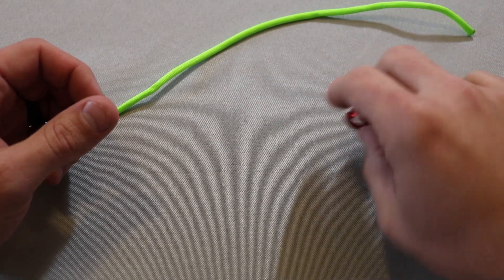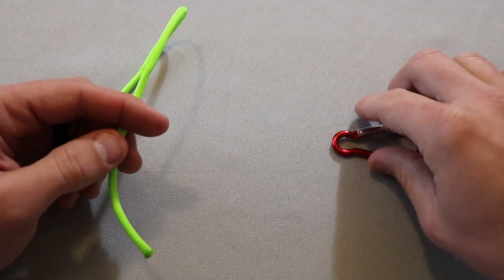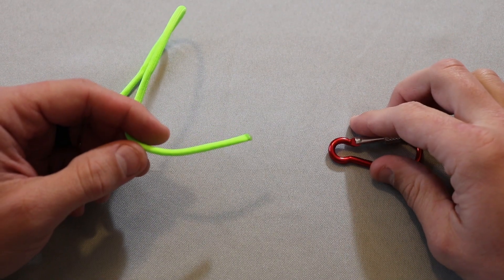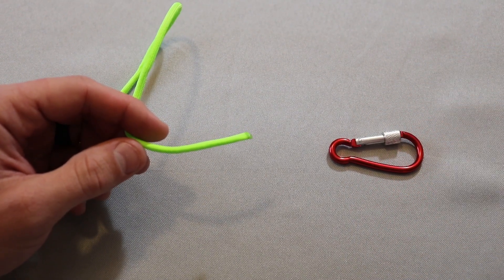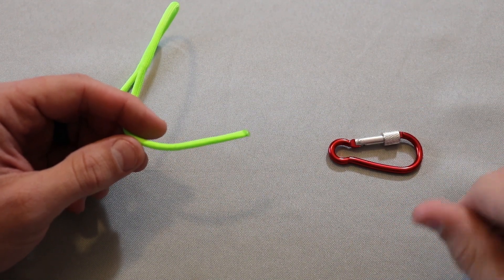The Rapala knot is a great knot for jerkbait fishing, whether it's for bass, trout, crappie, anything you're fishing jerkbaits for. When you want to have that good pause in between and it be a quick stop instead of a glide, this is the knot you need to learn how to tie.